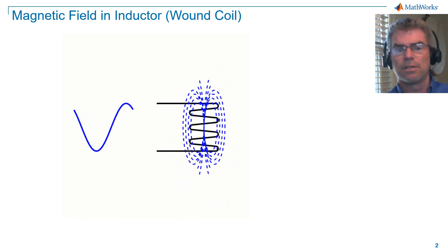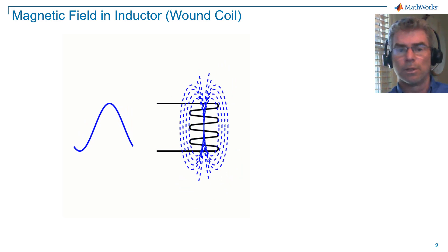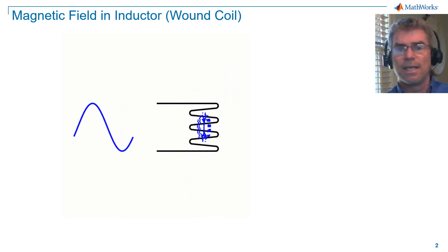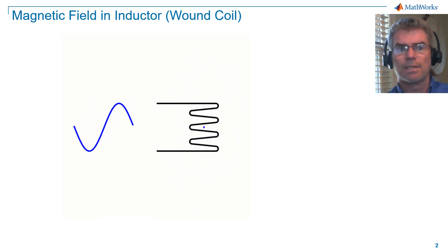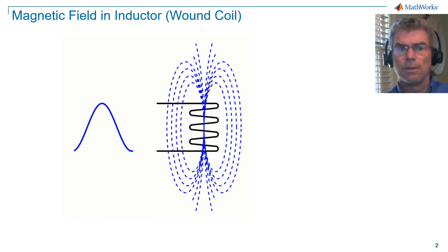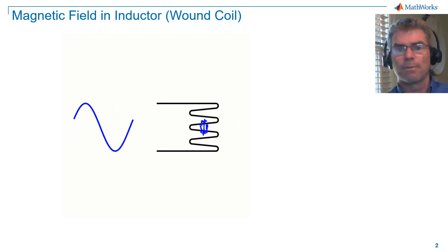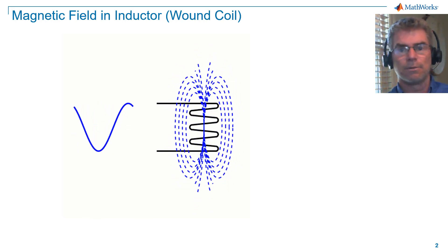Here you can see a representation of a coiled wire, otherwise known as an inductor, that has an AC voltage across its terminals. The AC voltage creates a magnetic field within the coil. You can see the flux lines growing and collapsing as a function of the instantaneous voltage level.